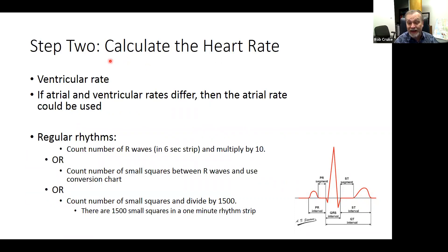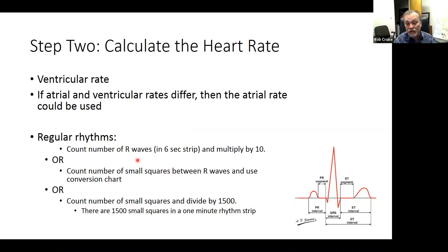Step two: calculate the heart rate. We look at the R waves to see what we can find out about them — are they regular or not? For regular rhythms, you can do a quick and easy method: count the number of R waves on your six-second strip and multiply by 10, and that gives you beats per minute. Or, for a more accurate count, count the number of small boxes between the R waves and use a conversion chart.